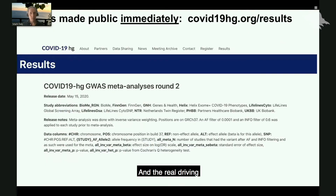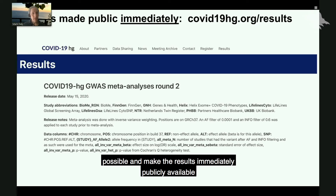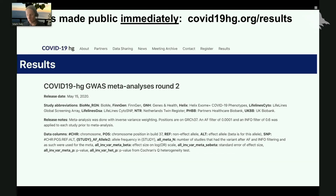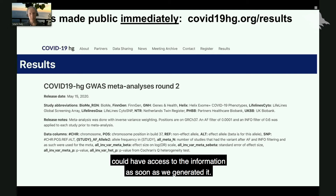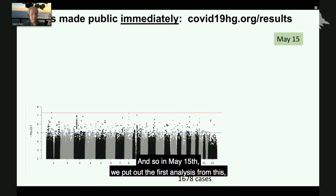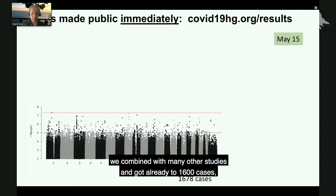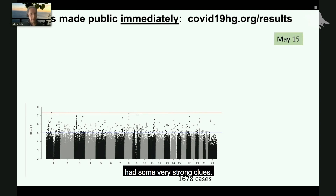The real driving motivation was that we would do global genetic studies with as many partners as possible and make the results immediately publicly available, so that every researcher in the world — in pharmaceutical industry, in universities, in hospitals throughout the world — would have access to the information as soon as we generated it. And so on May 15th, we put out the first analysis. Instead of 250 cases from FinnGen only, we combined with many other studies and got to 1,600 cases. We did not have a completely definitive set of answers, but had some very strong clues.